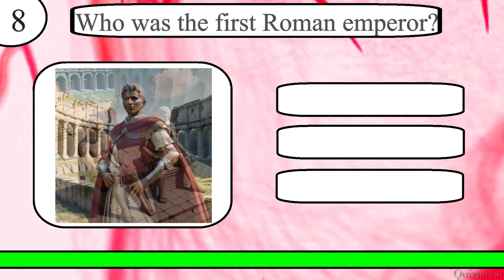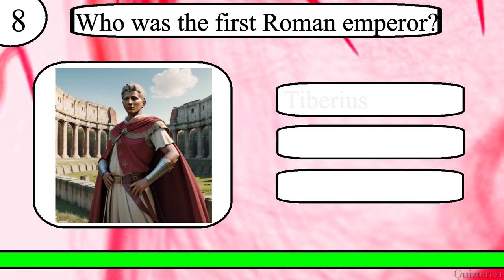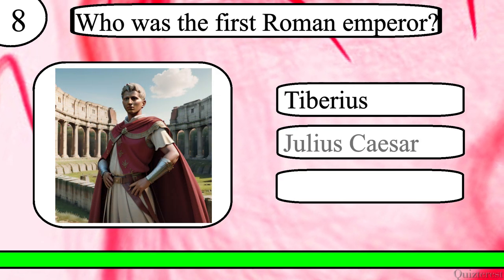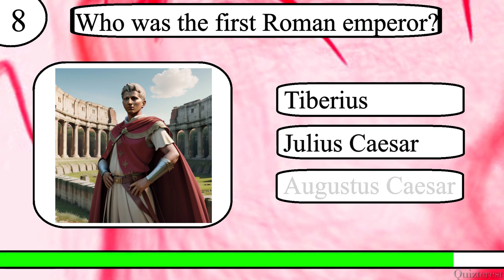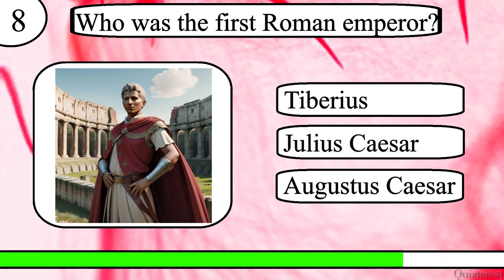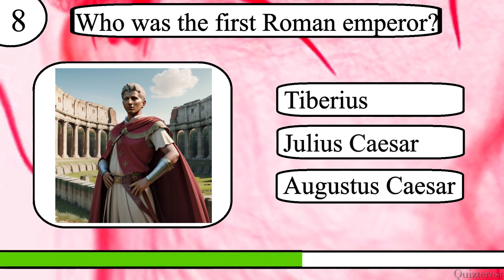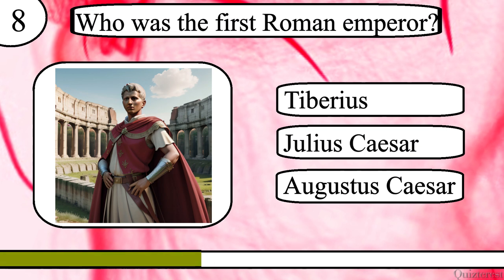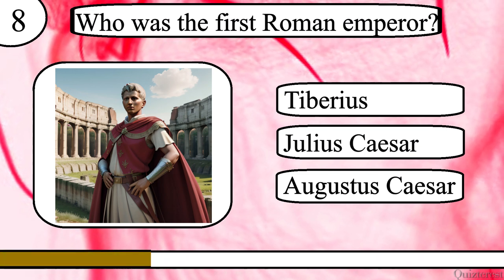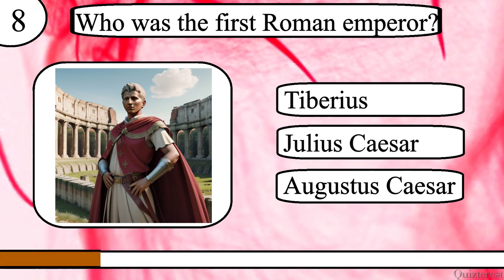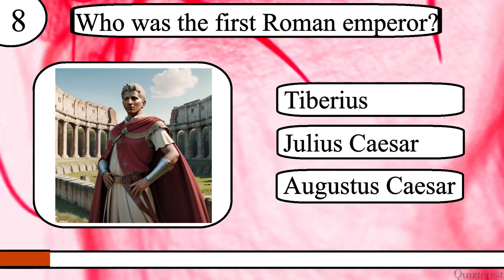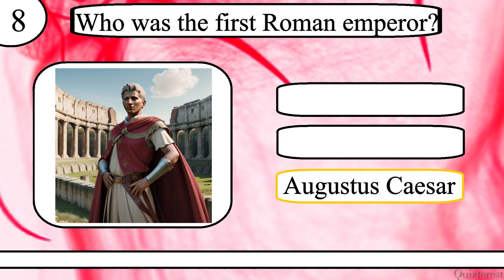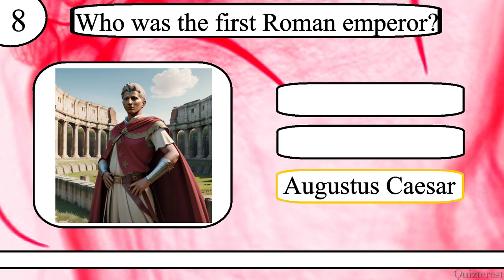Question 8. Who was the first Roman emperor? Tiberius, Julius Caesar or Augustus Caesar? The correct answer is Augustus Caesar.